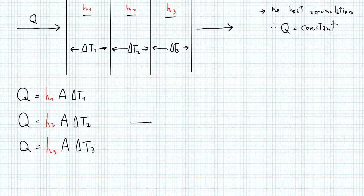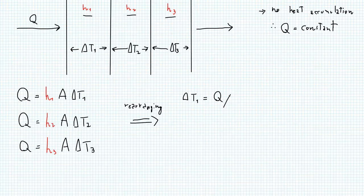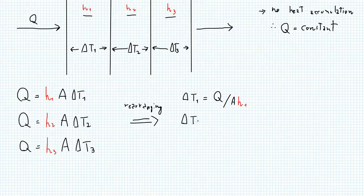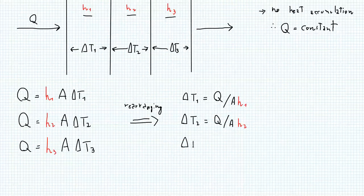These three equations can be rearranged for their delta T's to find that delta T1 equals Q over AH1, and delta T2 equals Q over AH2, and delta T3 equals Q over AH3.